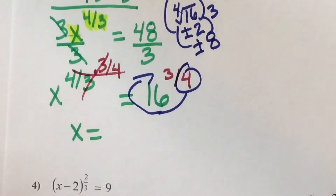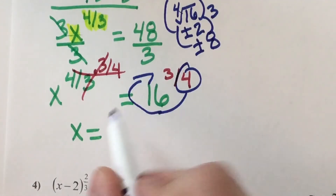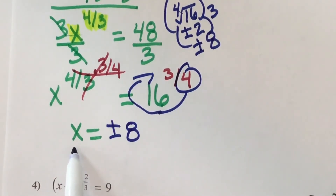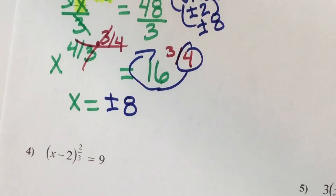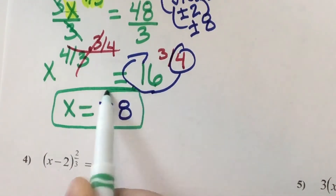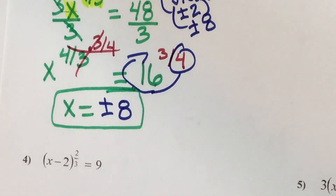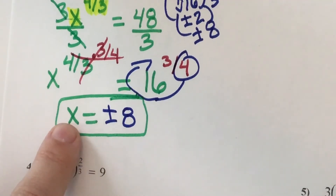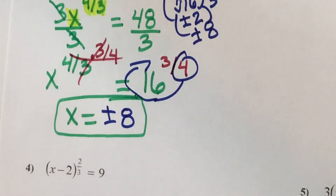So that's going to go right here — plus or minus 8. Do you notice how x is by itself? Since x is by itself, I'm done. I don't have to add or subtract anything. So my answer is just plus or minus 8. Most of the time we have something else over here that we have to get rid of, but this time we don't, so this one's easier.